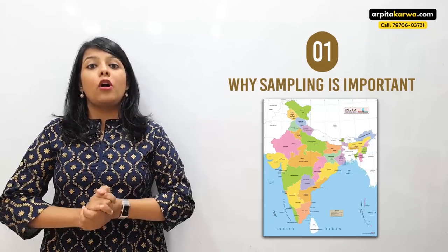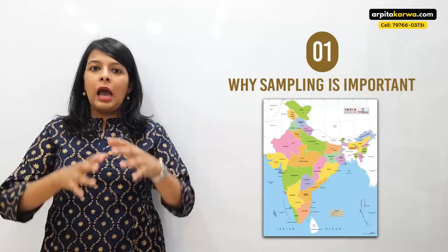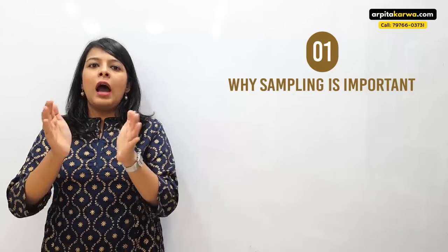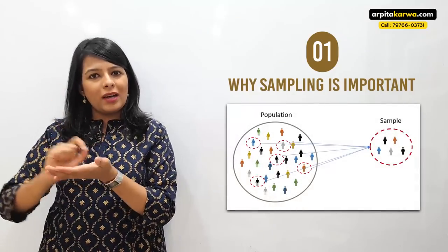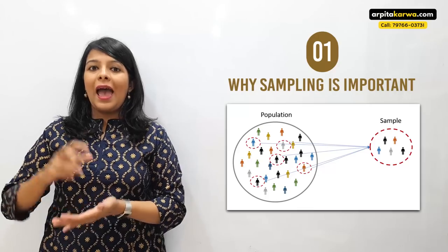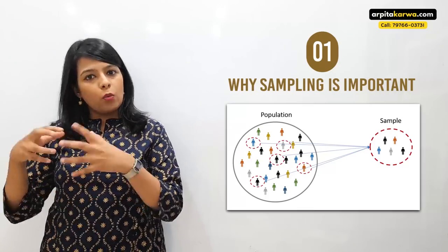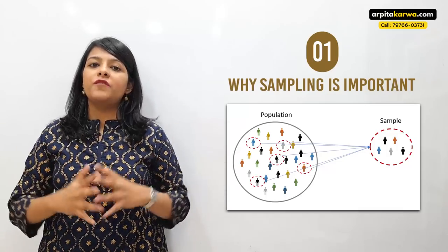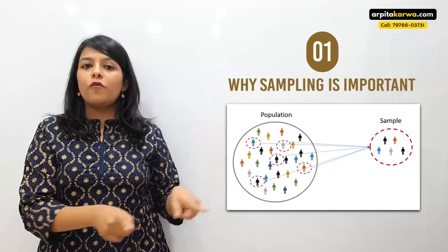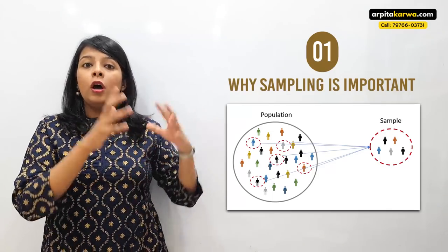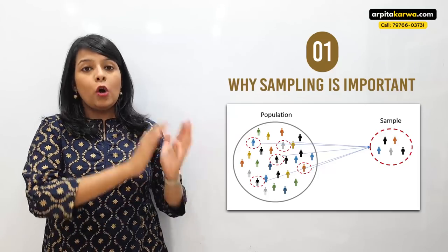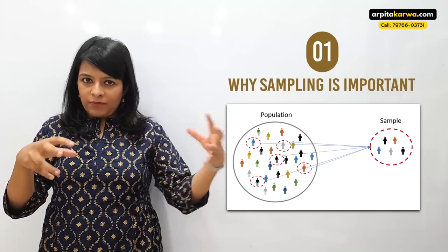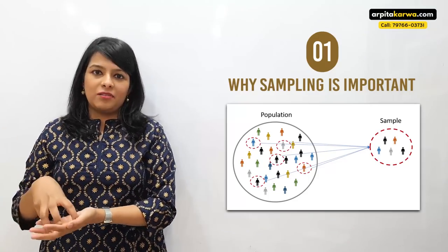So what I do in order to make my research simpler is that out of those 135 crore people, I randomly choose 1000 people, note down their height, and conduct my research on them. Whatever the result, I generalize it on 135 crore people. So this group of 135 crore people is known as the population, whereas the smaller group I select from them is known as the sample of my research.